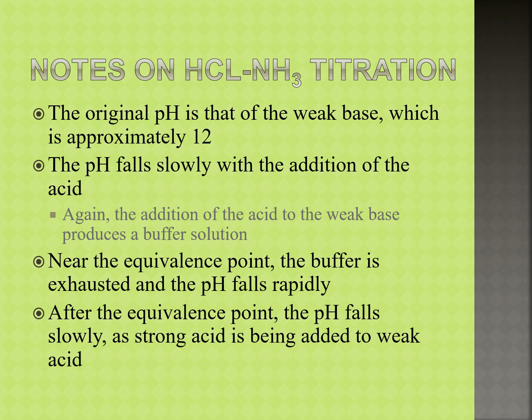As you look at our HCl and ammonia titration, notice that our original pH starts above seven — not super high, but somewhere around 12 or so. If we want to calculate the pH before titration, the only thing in there is a weak base. So in order to calculate the pH, we can say that KB is equal to our OH⁻ concentration squared divided by our weak base concentration.